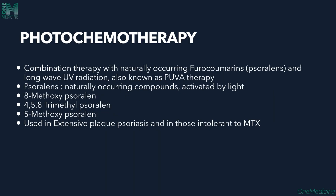The third modality is photochemotherapy — photo refers to light and chemo refers to a drug, so it is a combination therapy. The drugs used are called furocoumarins, otherwise known as psoralens, which are photosensitizers. Combined with long-wave ultraviolet radiation — UVA — this gives us PUVA therapy: psoralen plus UVA.